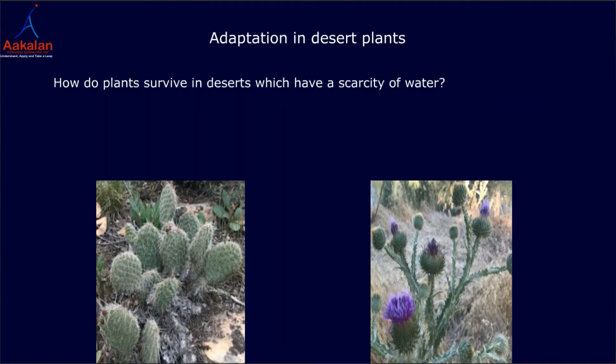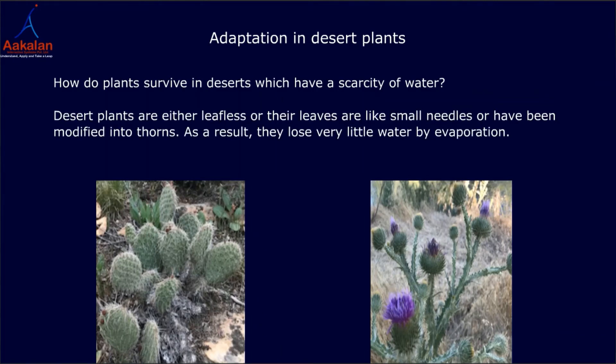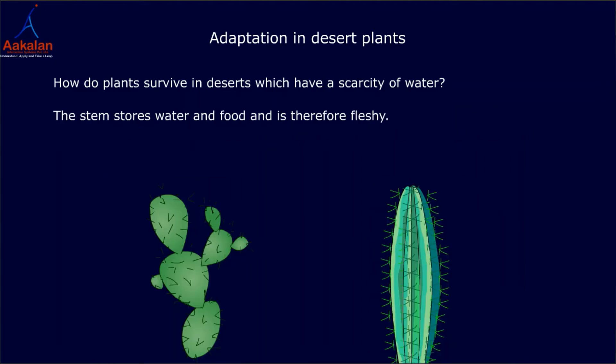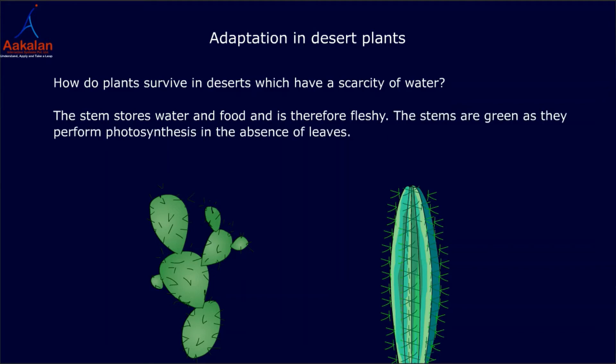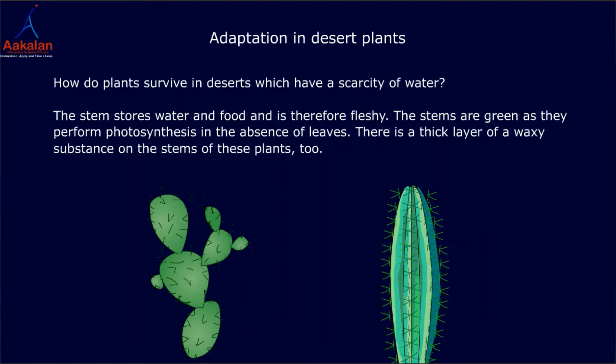Adaptation in desert plants: Desert plants are either leafless or their leaves are like small needles or have been modified into thorns. As a result, they lose very little water by evaporation. The stem stores water and food and is therefore fleshy. The stems are green as they perform photosynthesis in the absence of leaves. There is a thick layer of a waxy substance on the stems of these plants. Their roots penetrate deep into the soil in search of water.